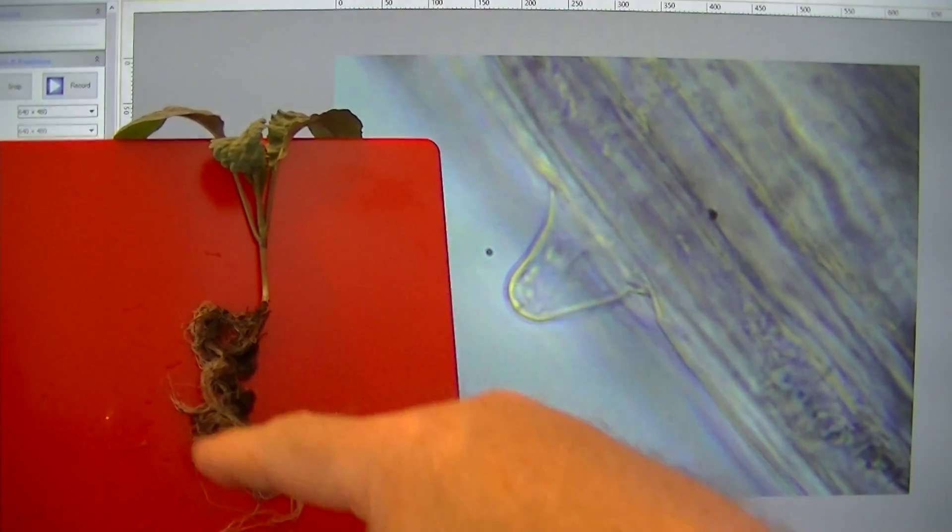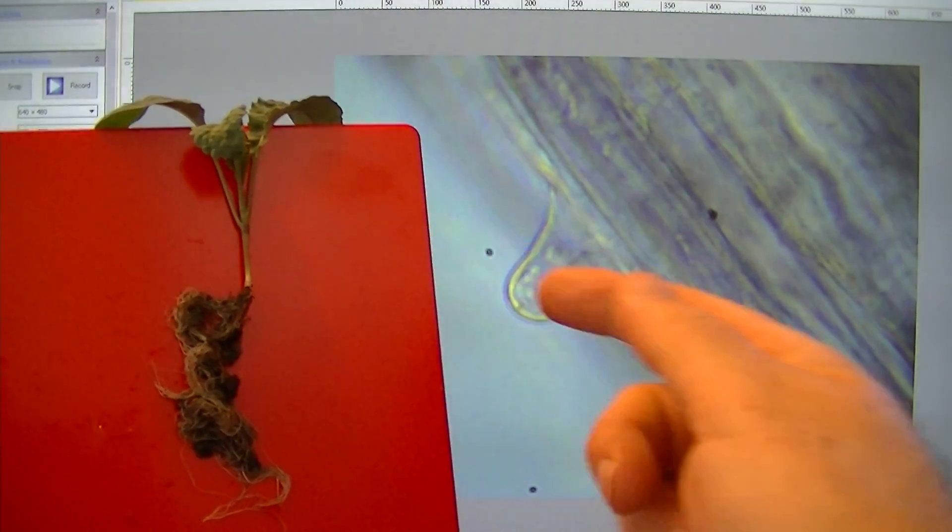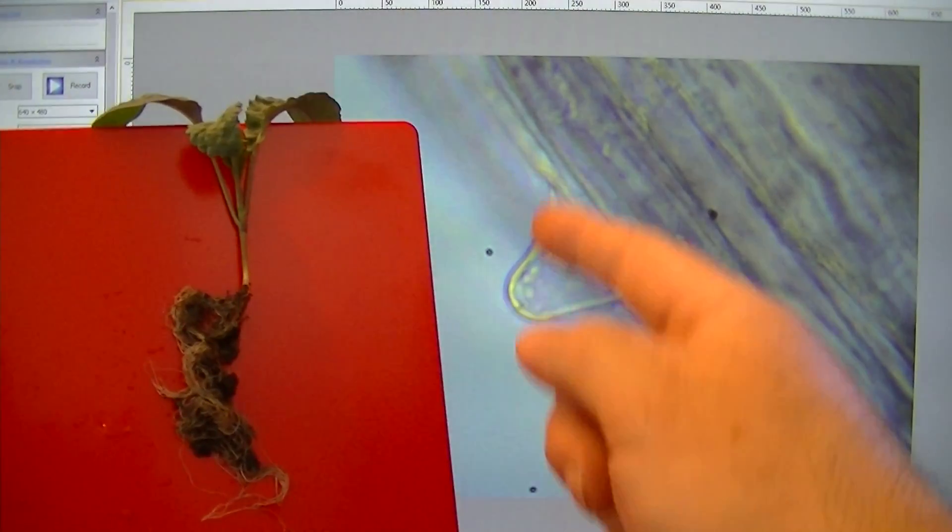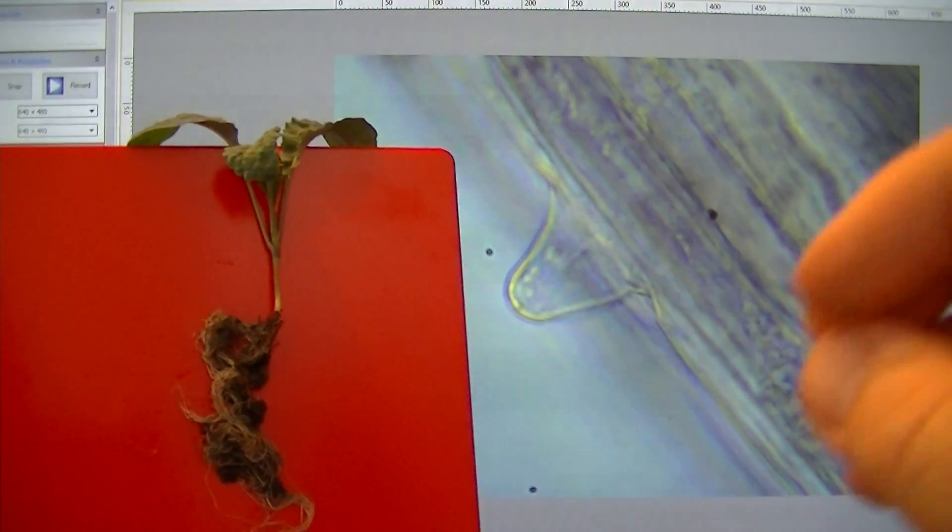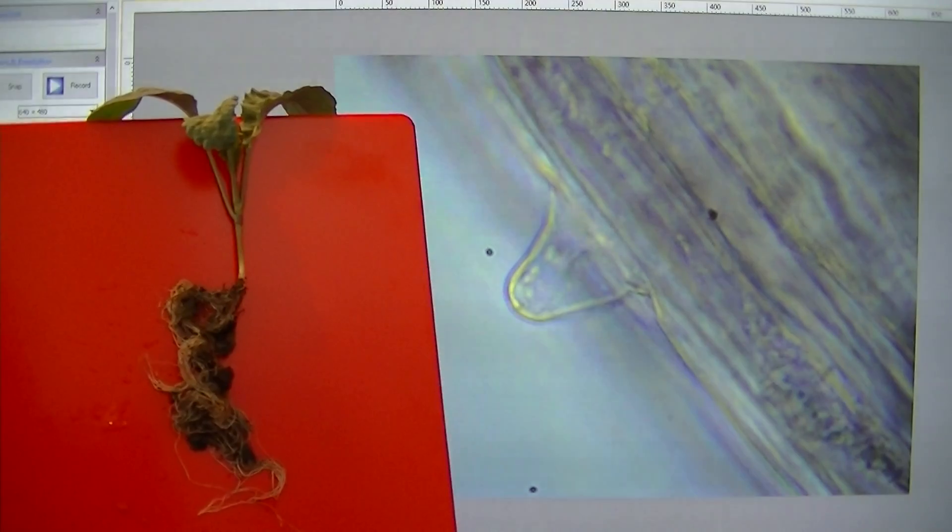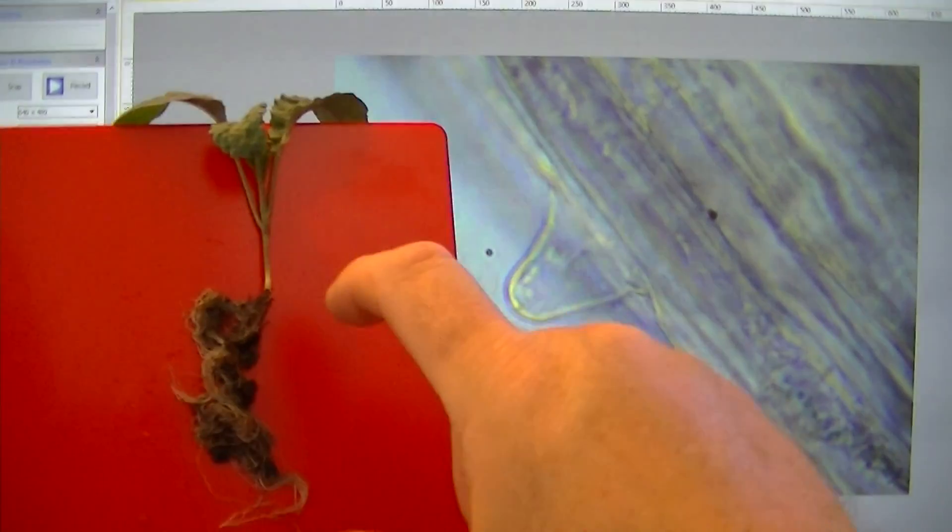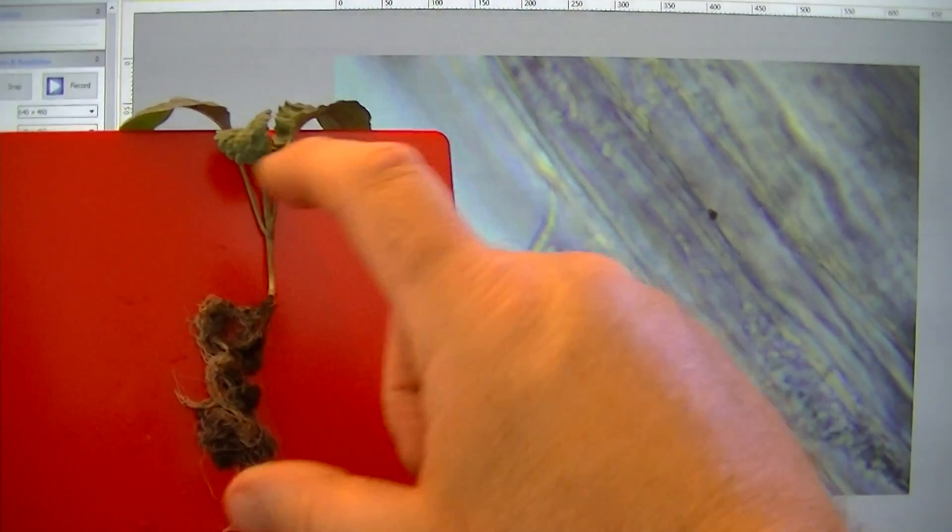Only the non-mycorrhizal plants are going to use those root hairs and excrete a large amount of acid and constantly do it all the time. It has developed that way. Nature has set its standards in these groups of plants only that can do this. You can never get a tomato plant to do that.